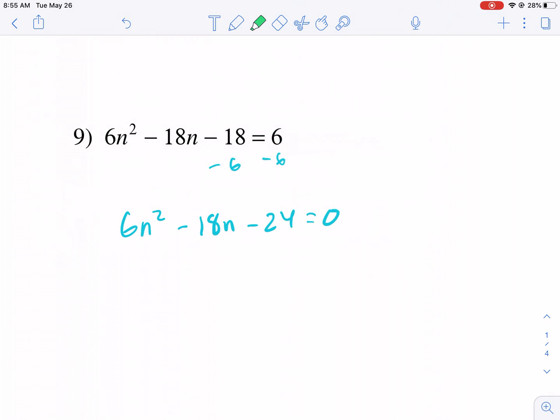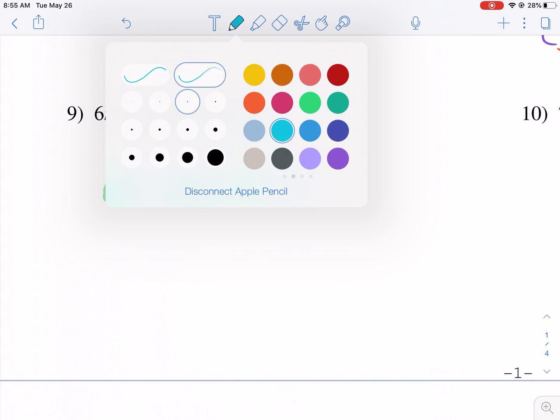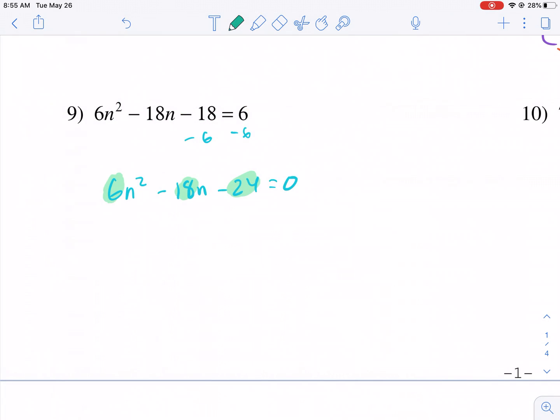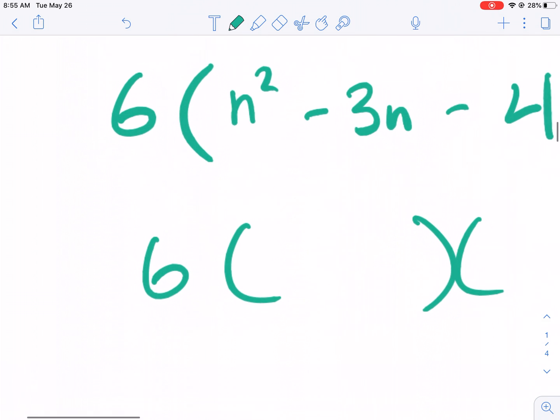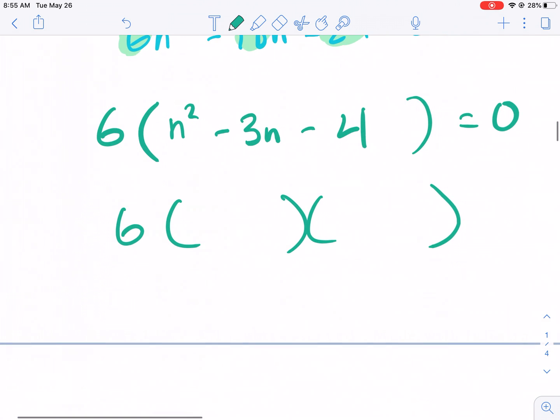If you notice that there is a common factor between all three terms, your first step should be factoring out that common factor, the GCF, greatest common factor. In this case, it's 6. So what happens when we divide everything by 6? We get n squared minus 3n minus 4. And that's equal to 0. Now we can factor this, but we've got to leave this 6 out in front. This 6 does not affect the 0 product property.